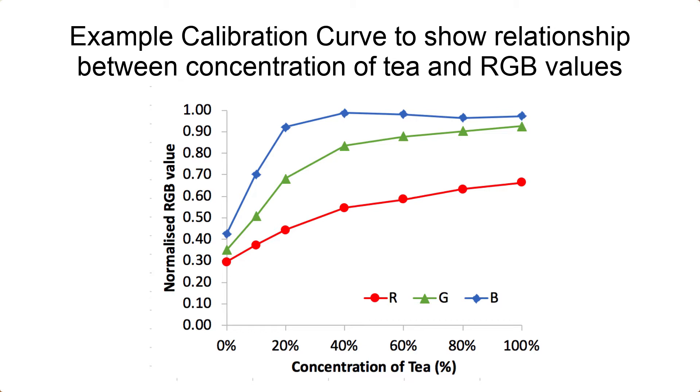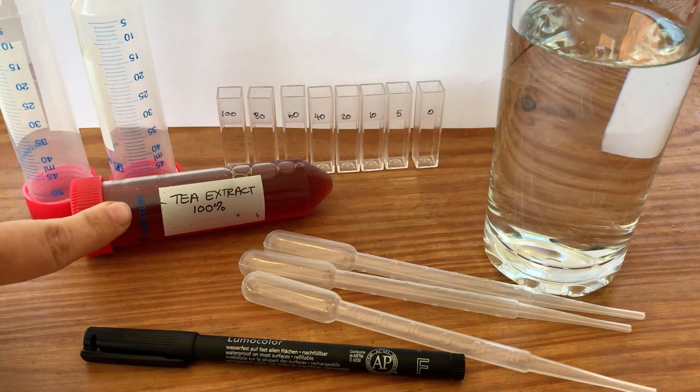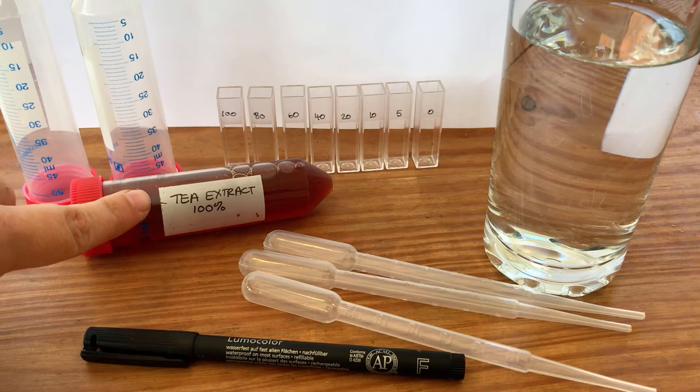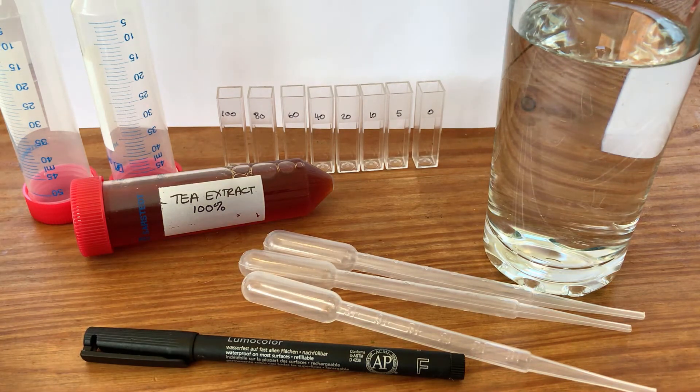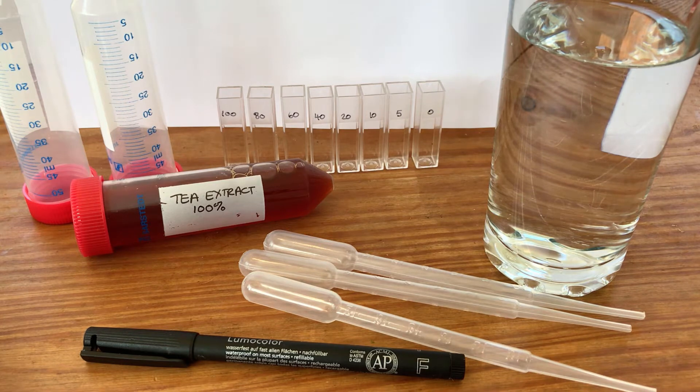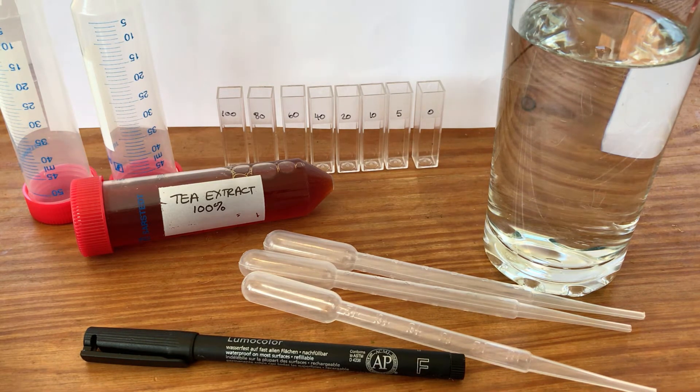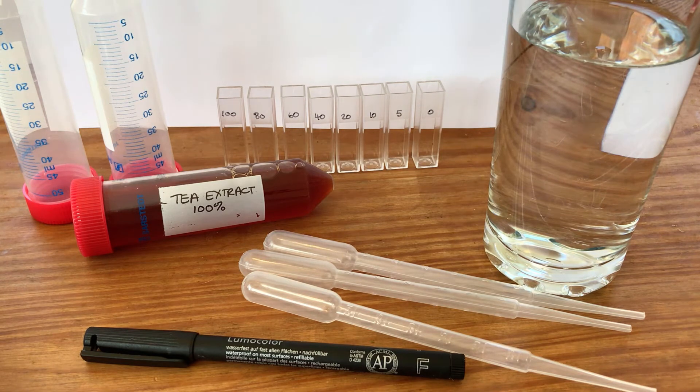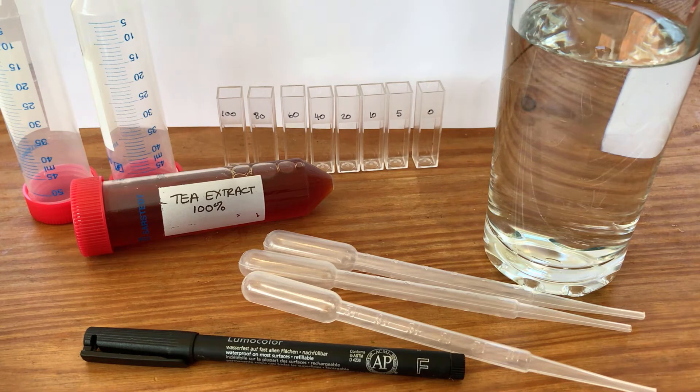So we need to set up a series of dilutions of our tea. This is the 100% extract, just the cup of black tea I'm defining as a hundred percent. Obviously that will be different for different people, you might have brewed it for longer or whatever, so this will be your data. We can't really compare data between people, you need to do your own dilution series, it won't make sense if you try and get the data from somebody else.